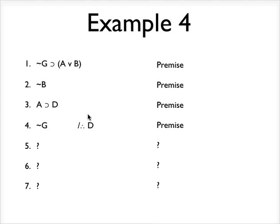So, strategy-wise, we're trying to derive D. Here is a conditional statement where the D is the consequent of the conditional. I could use modus ponens to derive the D if I had A by itself on a line, but I don't have A by itself on a line. I have an A here, but that's embedded in a complex statement, right?